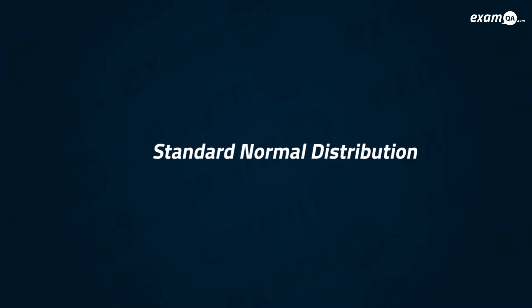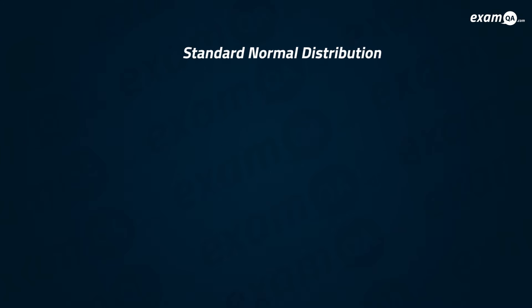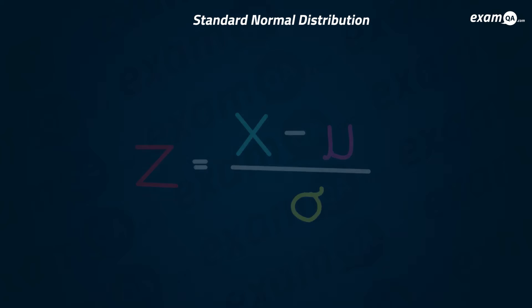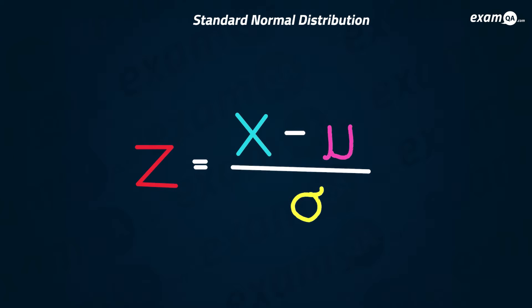In this video we're going to be looking at standardized scores and using the standard normal distribution. Here's the formula which allows you to standardize a certain value: you take your value x, subtract the mean mu, and divide it all by the standard deviation sigma. That gives you the z value, which is the standardized value.